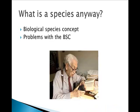Ernst Mayr, in 1942, defined a species as what is currently recognized as the biological species concept. He said a species is a group of actually or potentially interbreeding natural groups that are reproductively isolated from other groups.